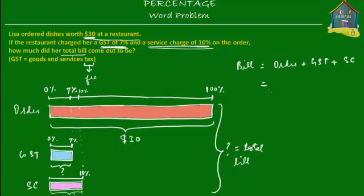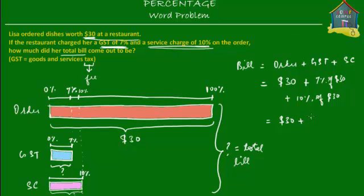Let's find out what each of these is equal to in dollars. The order is $30. The GST is 7% of $30, so let's write that as 7/100 of $30. The service charge is 10% of $30 because it's 10% of the order. So: $30 plus 7% of $30 plus 10% of $30.